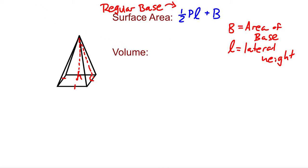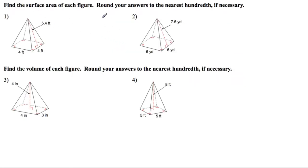So we'll come back to volume in just a second, but let's look at a couple of problems where we have to find surface area. So again, we have that the surface area is equal to one-half of the perimeter times the lateral height plus the area of the base.